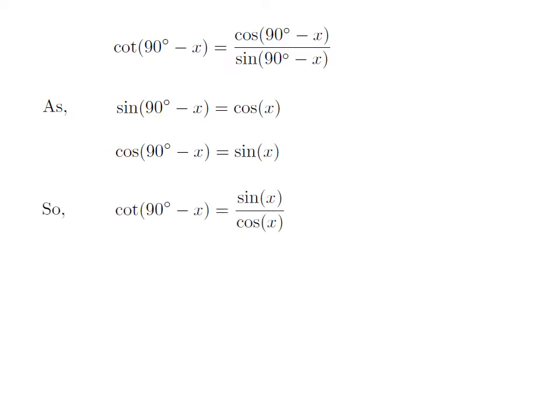Applying the above identities, cot(90° - x) is equal to sine of x divided by cosine of x. Since sin x divided by cos x is equal to tangent of x, cot(90° - x) is equal to tangent of x.